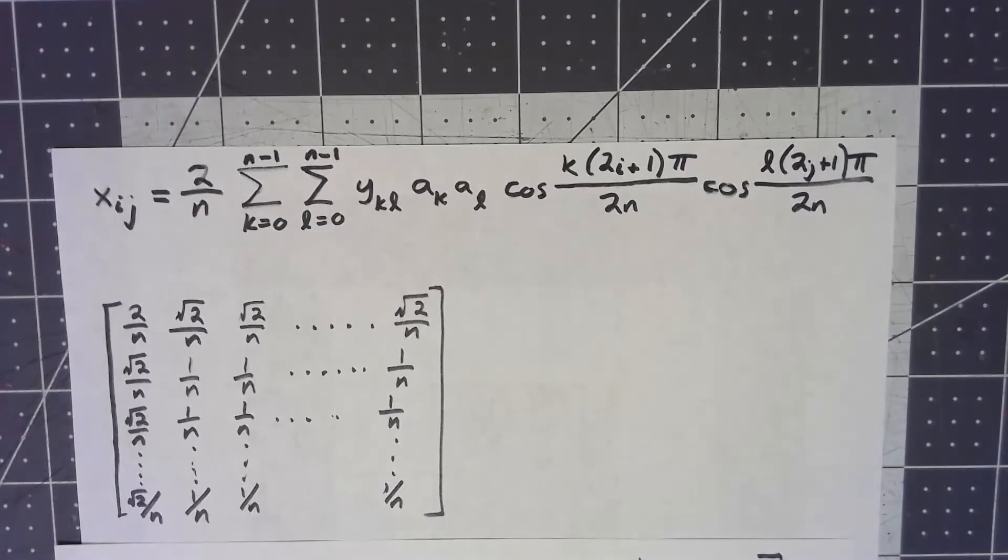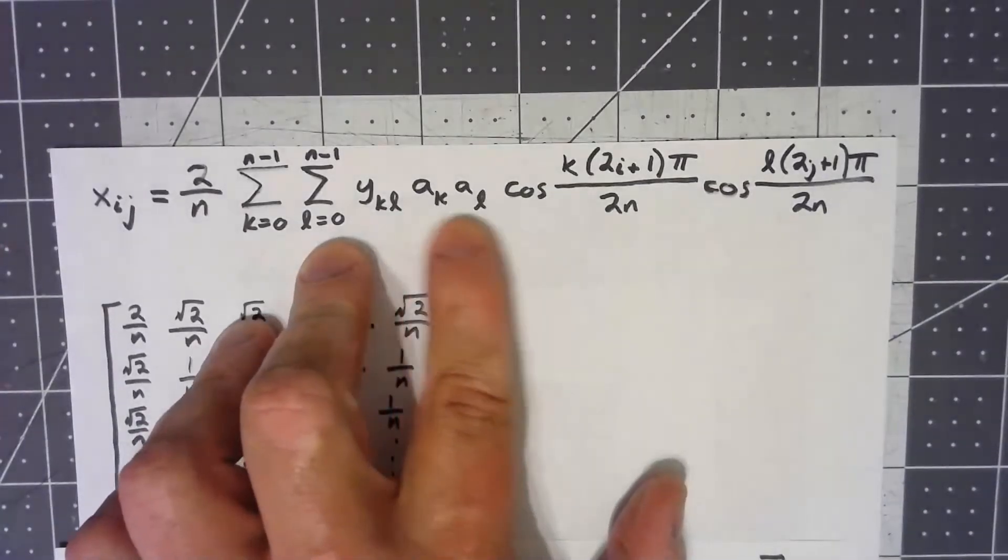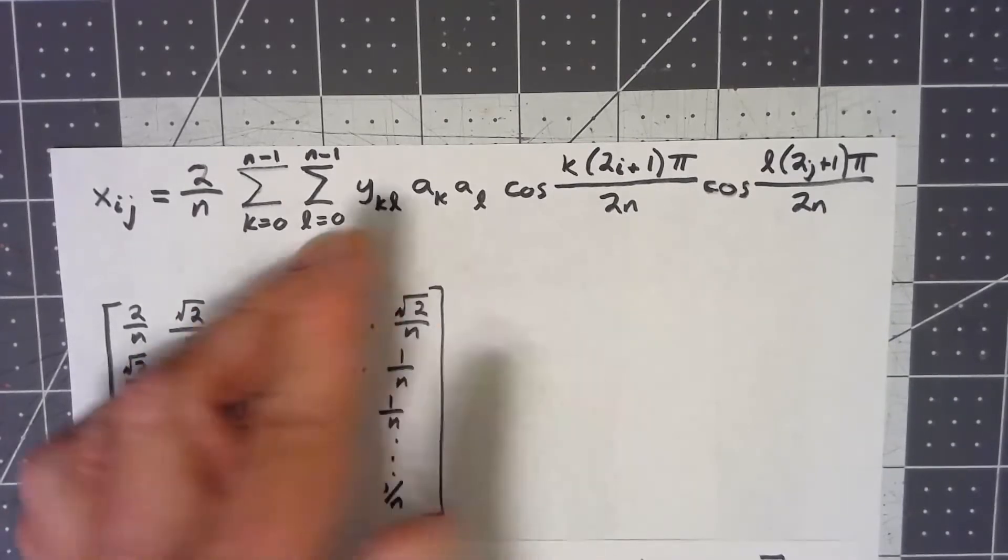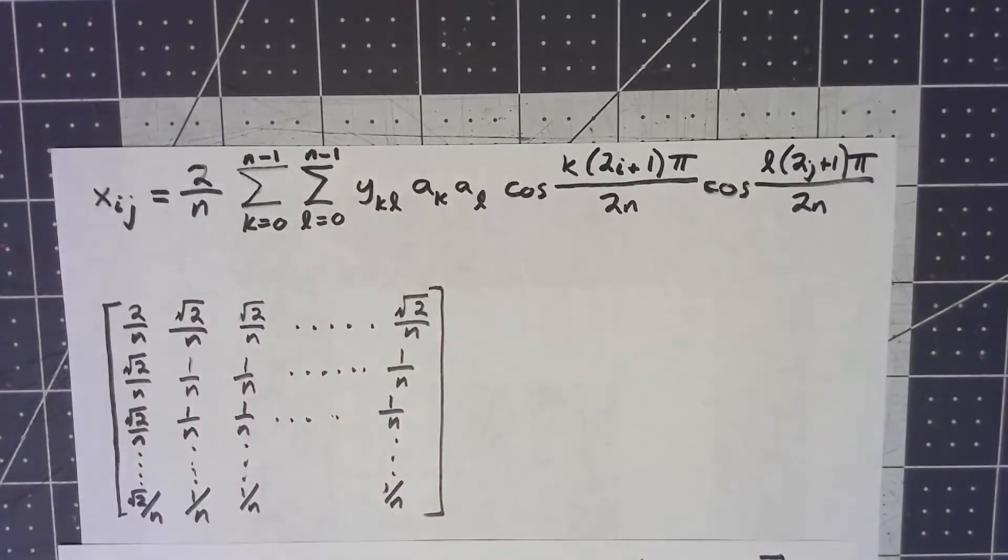So I went ahead and thought about it in a slightly different way. First of all, these a_k and a_l's are just like they were for the one-dimensional discrete cosine transform, where if it was zero it was a one, and if it was anything other than that, it was one over square root of two.